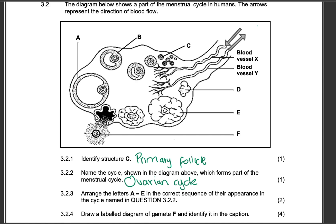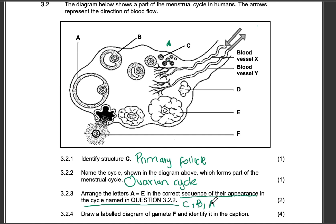Arrange the letters A to E in the correct sequence of their appearance in the cycle. What we're having here is the corpus luteum that is degenerating. They're asking us for a correct sequence. It's going to start with the primary follicles, then one will start growing to become a secondary follicle, then the Graafian follicle. Ovulation takes place, then a corpus luteum gets formed, and this corpus luteum is becoming smaller — degenerating. So the correct sequence is C, then B, then A, then E, then D.